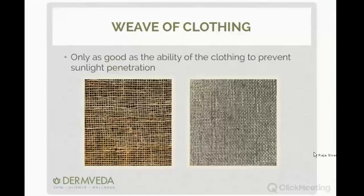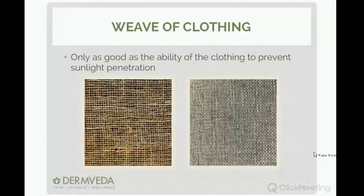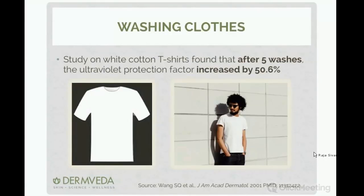The weave is especially relevant for white cotton t-shirts. Researchers studied what happens when you put a white cotton t-shirt through the wash-and-dry cycle. They took a white cotton t-shirt, put it through the washer and dryer five times, and found that just by shrinking and washing it five times, the UV protection factor increased by 50%. White t-shirts typically start at about SPF 3 to 4, and after pre-washing they go up to about SPF 6.